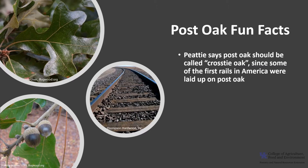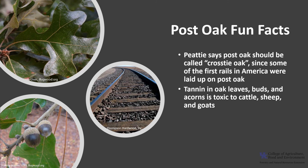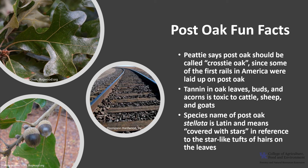Now for a few fun facts about post oak. In the Natural History of Trees by Peattie, he says post oak should be called 'cross-tie oak' since some of the first rails of our railway system in America were laid upon post oak. This may not actually be a fun fact, but the tannin in oak leaves, buds, and acorns is toxic to cattle, sheep, and goats, and that poisoning occurs more frequently in drought years when other forage is in short supply. The most dangerous season is spring, when new foliage sprouts between March and April. The species name of post oak, stellata, is Latin and means 'covered with stars,' in reference to the star-like tufts of hair on the leaves.